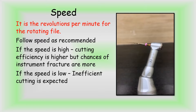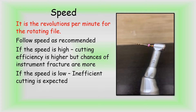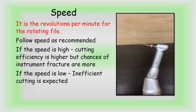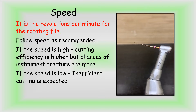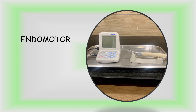Speed is the revolutions per minute for a rotating file. Follow the speed as per the manufacturer's recommendations. If the speed is high, the cutting efficiency is higher but the chances of instrument fracture are more. If the speed is low, inefficient cutting is expected. The torque and speed are set on the endomotor before we start canal preparation with rotary files, using the values recommended by the manufacturer.